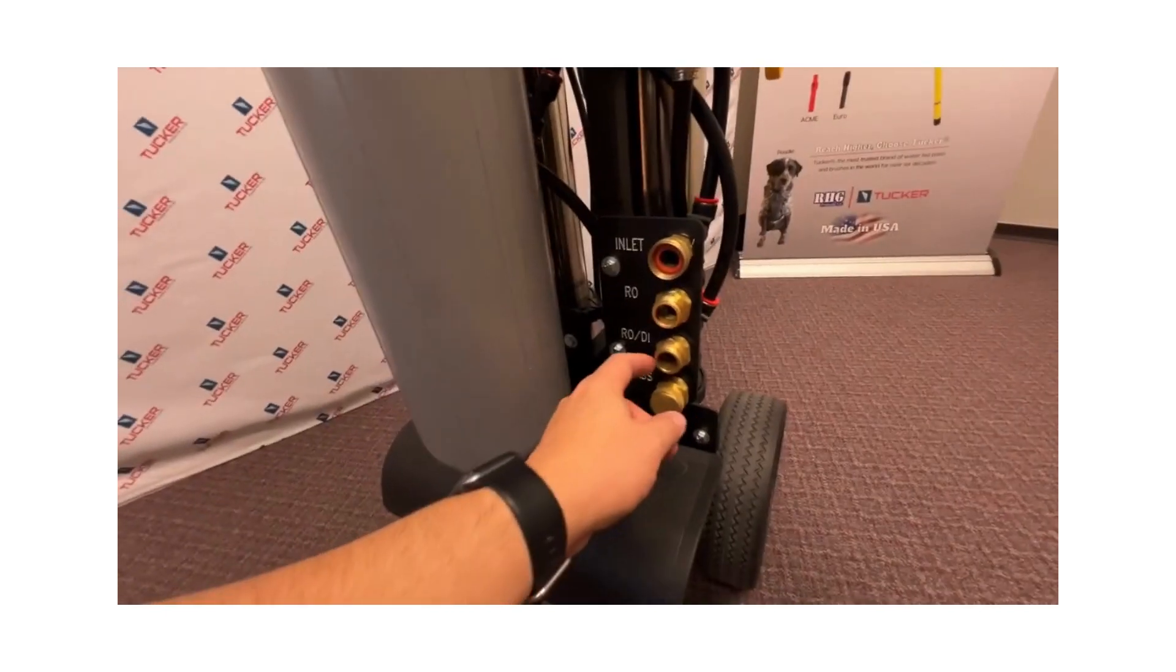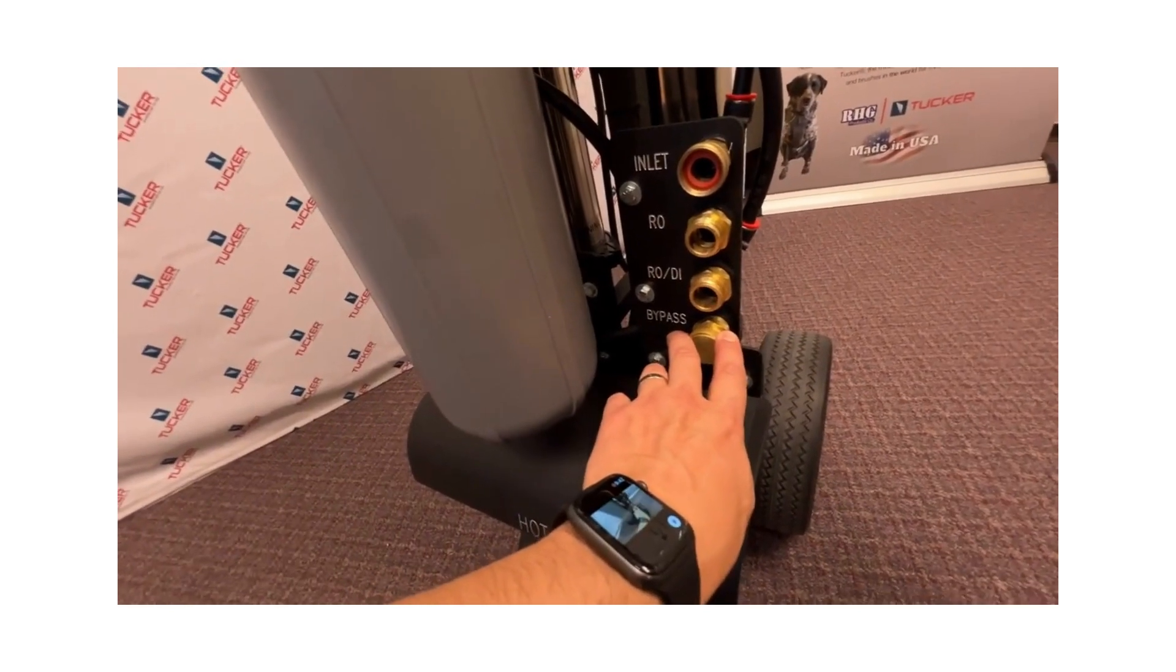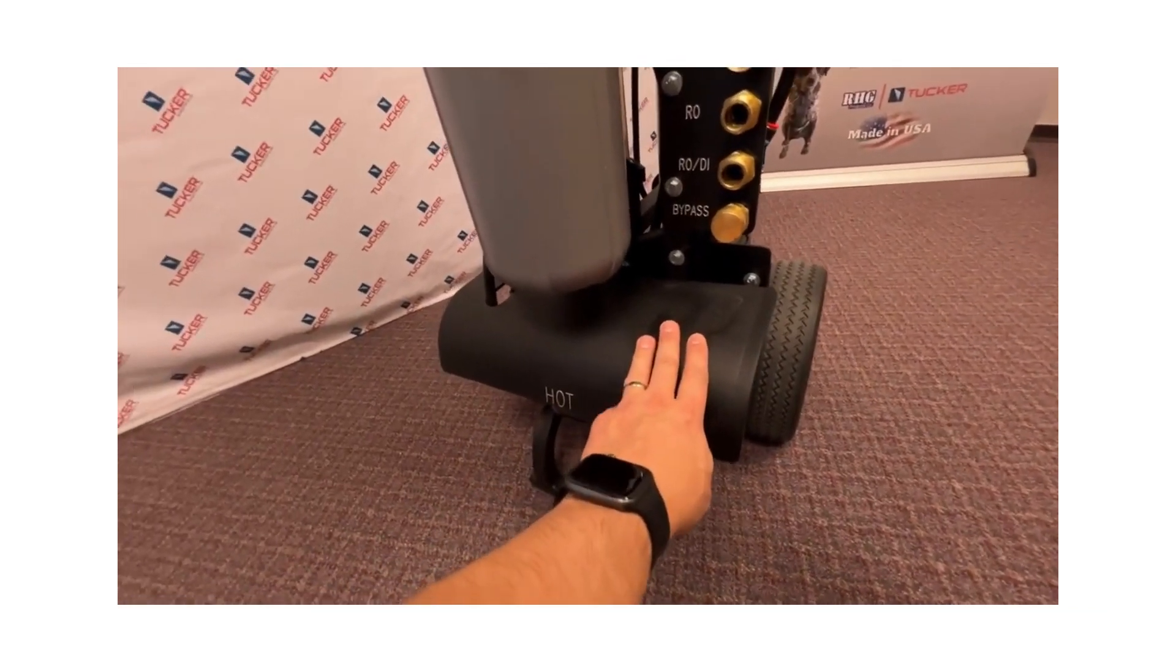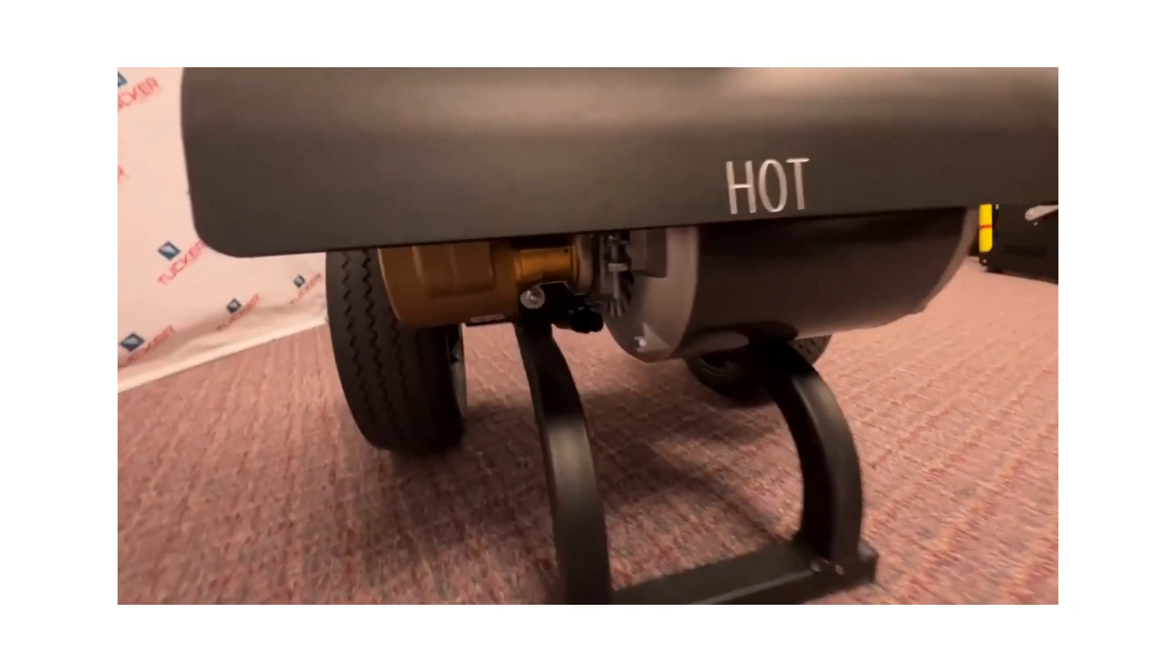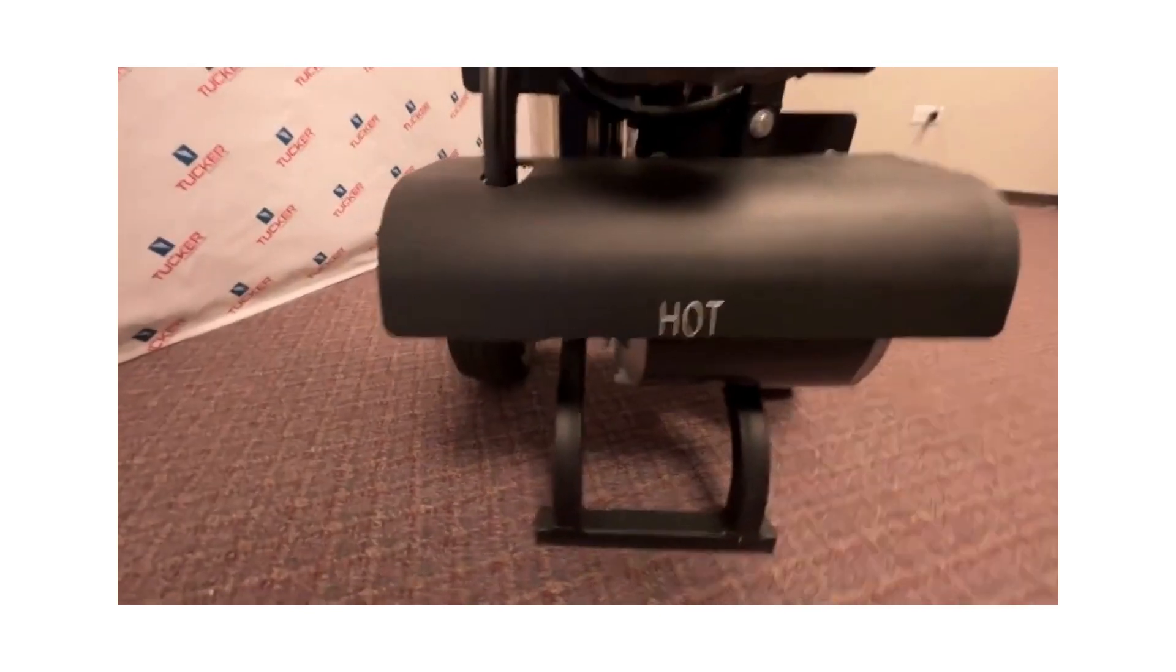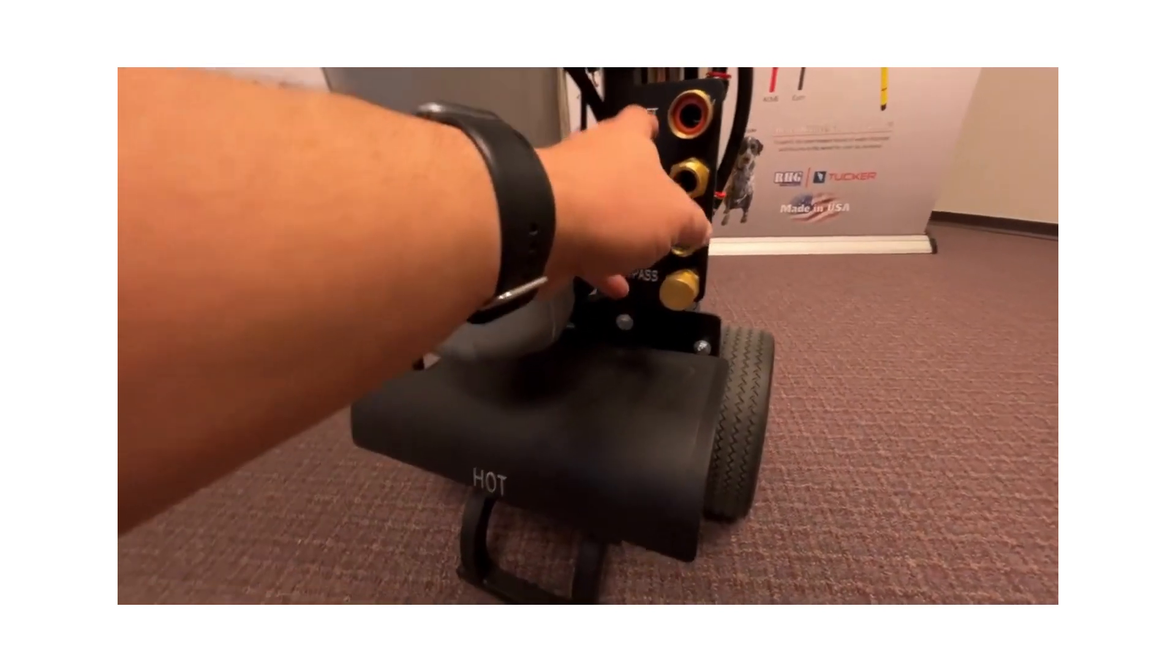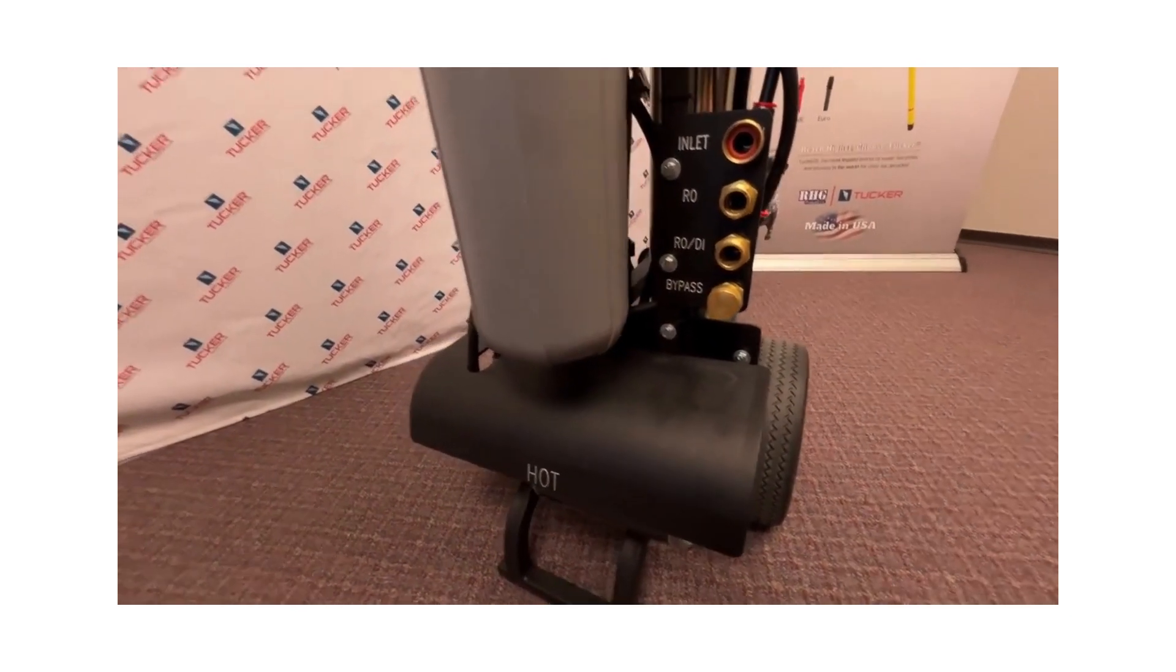Here we have our bypass valve. This is your wastewater here. You see we have our heat shield. This is to cover our onboard 110 plug-in pump. We have this there just to protect you in case this gets hot, and obviously we have water coming out of here, so we're gonna shield the pump from getting any water on it.